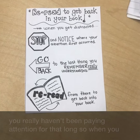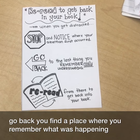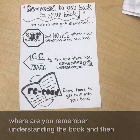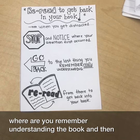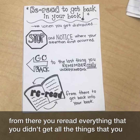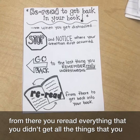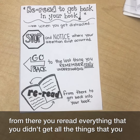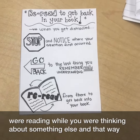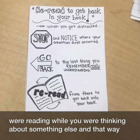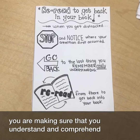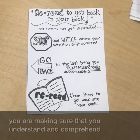So when you go back, you find the place where you remember what was happening, where you remember understanding the book. And then from there, you re-read everything that you didn't get — all the things that you were reading while you were thinking about something else. And that way, you are making sure that you understand and comprehend.